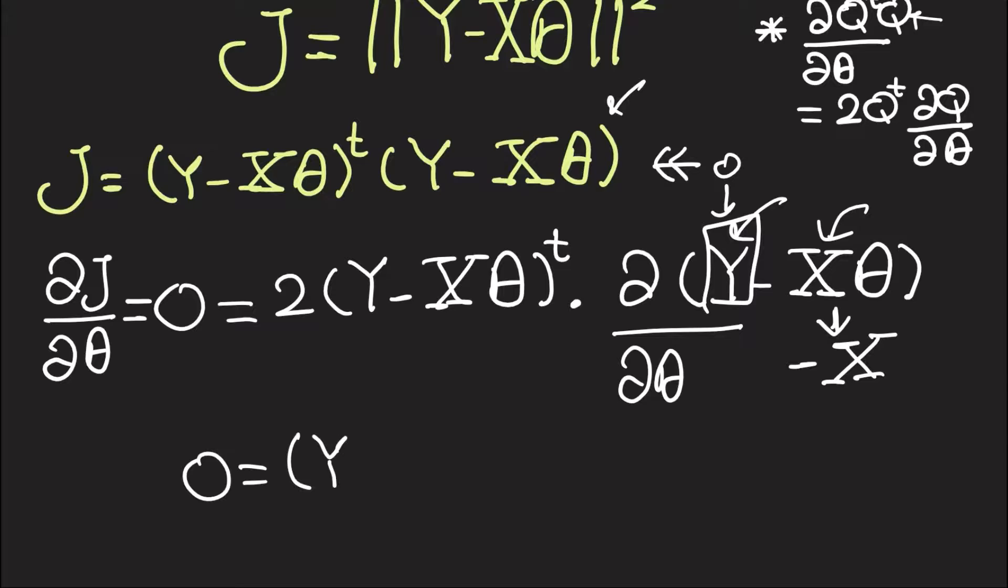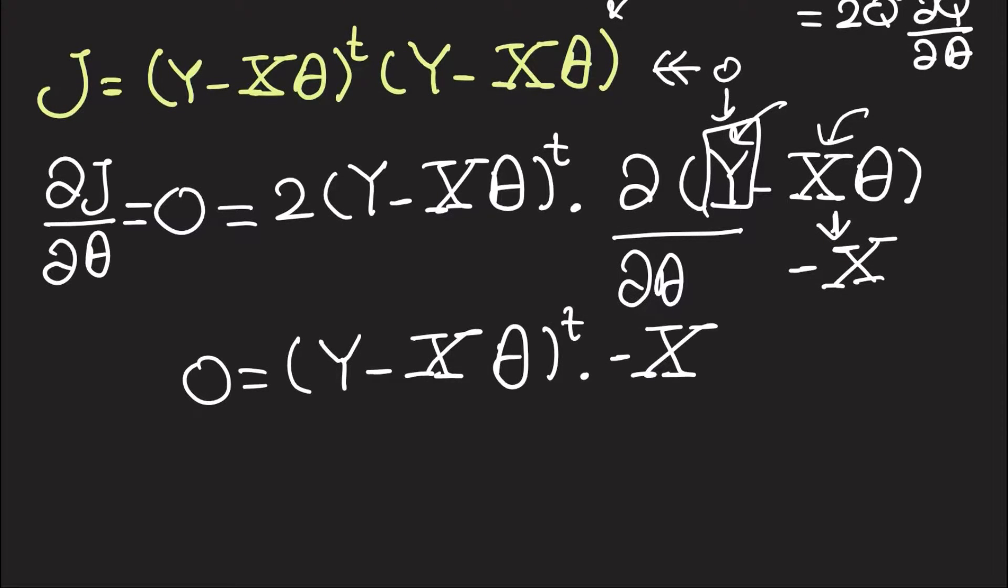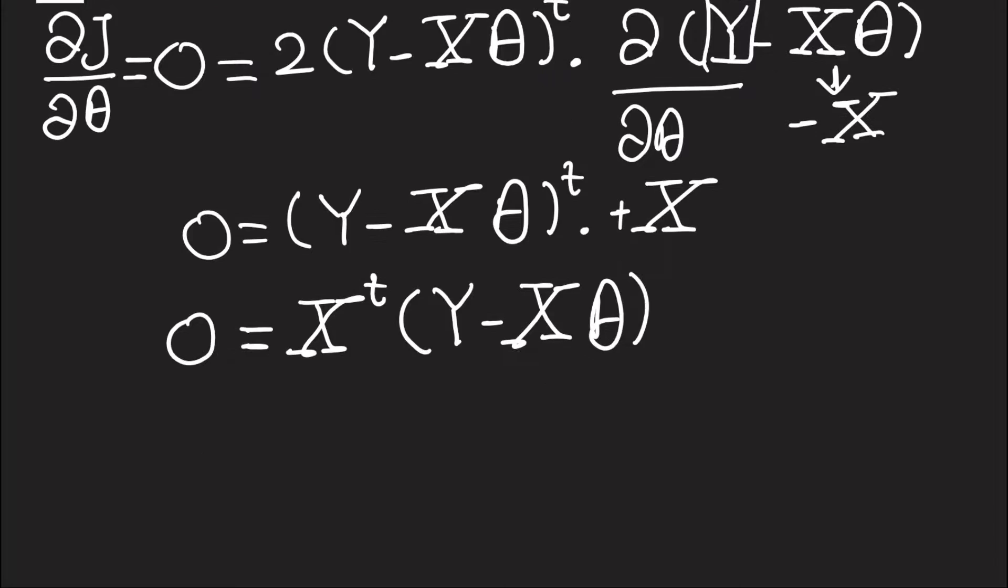So what we have now is 0 equals (Y - X theta) transpose multiplied by negative X. And here, how about taking the transpose of this whole thing and getting rid of the negative? So this means we have 0 equals X transpose times (Y - X theta). And then we're going to introduce X transpose into each of these terms.